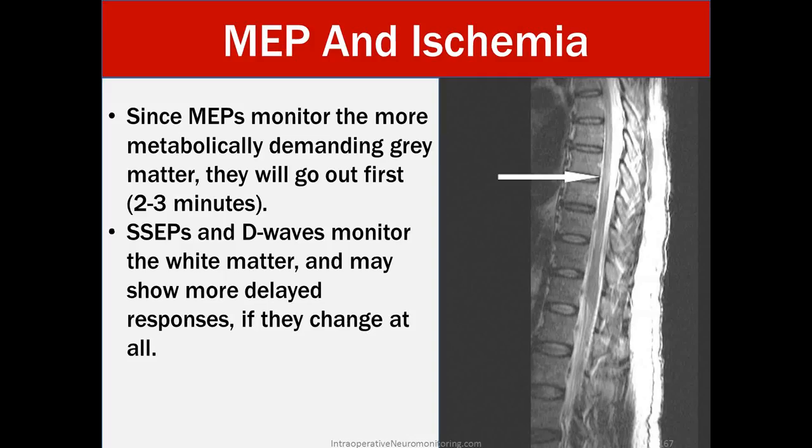MEPs and ischemia. Since MEPs monitor the more metabolically demanding gray matter, they will usually go out first, and that'll happen within two to three minutes. SSEPs and D waves monitor white tracks and may show more delayed responses if they change at all. And remember, the cord has different vascular supply where the anterior portion of the cord is less well-vascularized, where the posterior has this web-like formation that goes up and down the back of the cord.